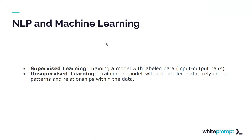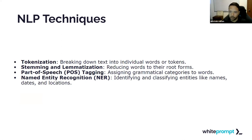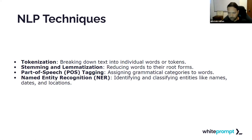An audience member asks which technique is used by ChatGPT. The speaker responds: since it's a huge language model, they would probably employ all these techniques for various features being engineered. Certain features require different approaches — for example, for other types of models such as regression models, we use hot encoding. Various techniques are applied in each case, and ChatGPT likely uses all of them, if not more.